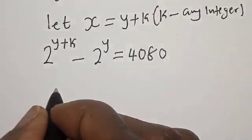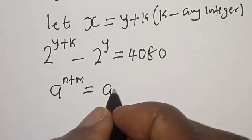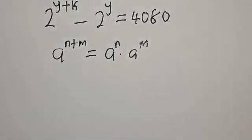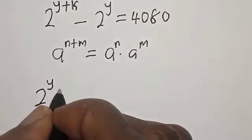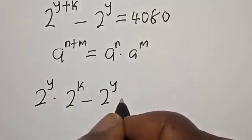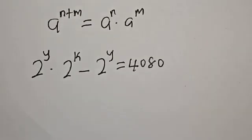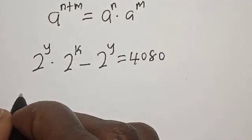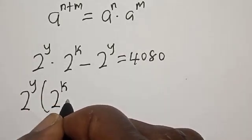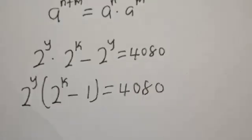Now, note that a raised to power n plus m is equal to a raised to power n multiplied by a raised to power m. Applying this, we get 2 raised to power y multiplied by 2 raised to power k minus 2 raised to power y is equal to 4080. Factoring out 2 raised to power y, we get 2 raised to power y times the quantity 2 raised to power k minus 1, equal to 4080.